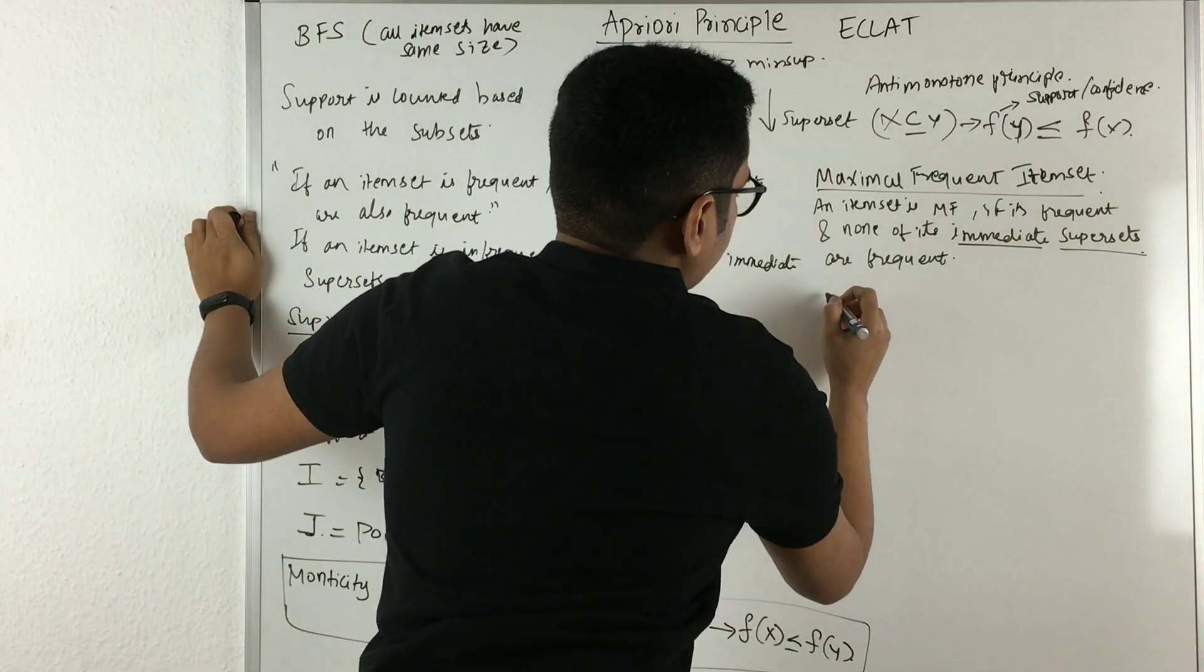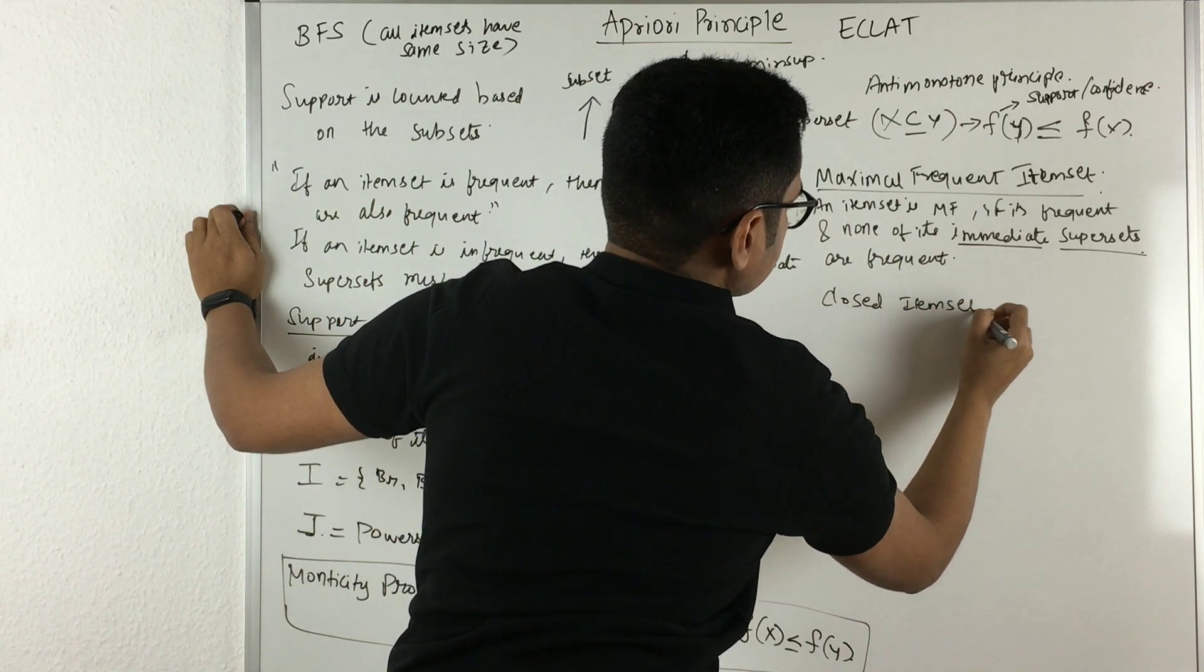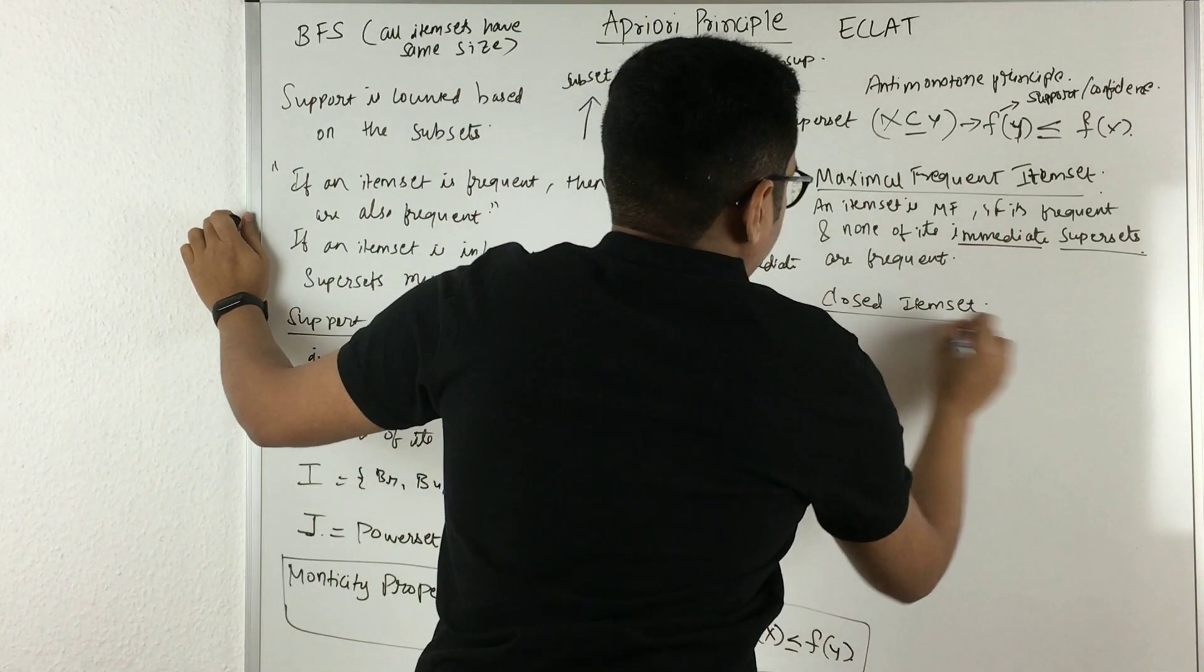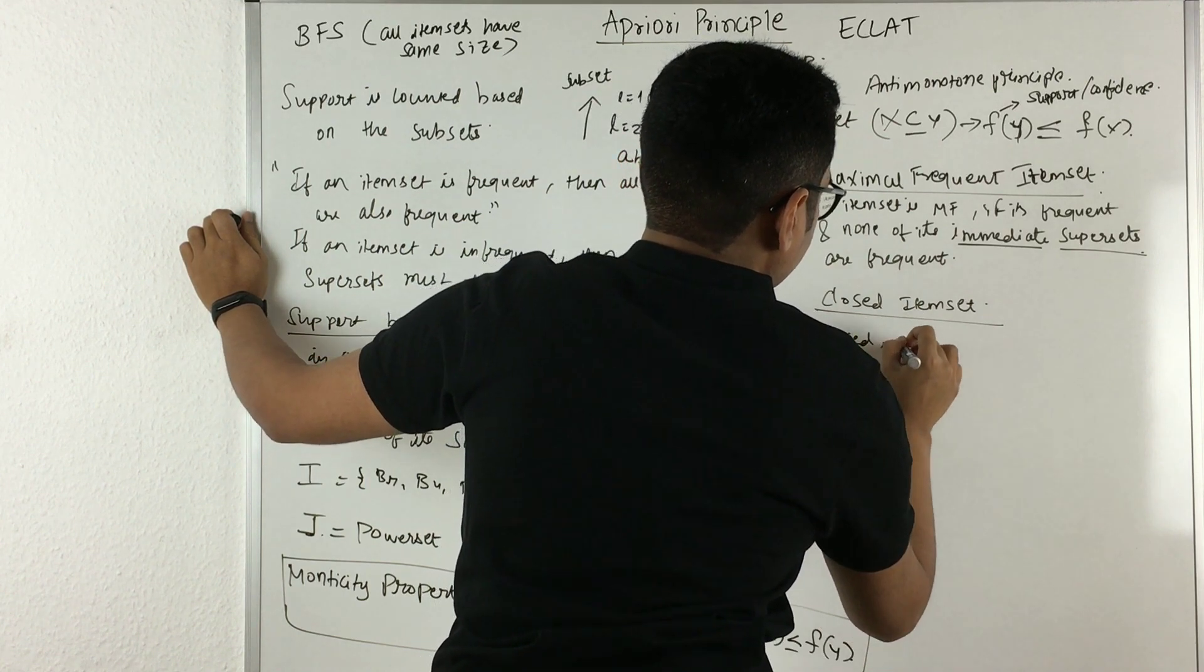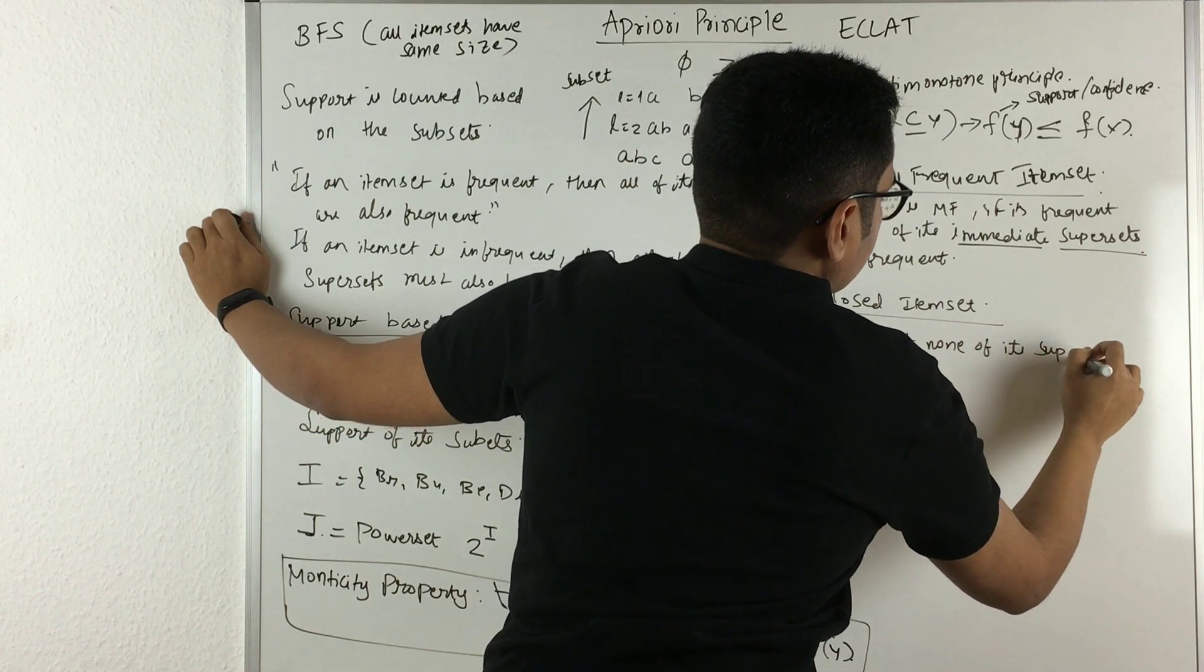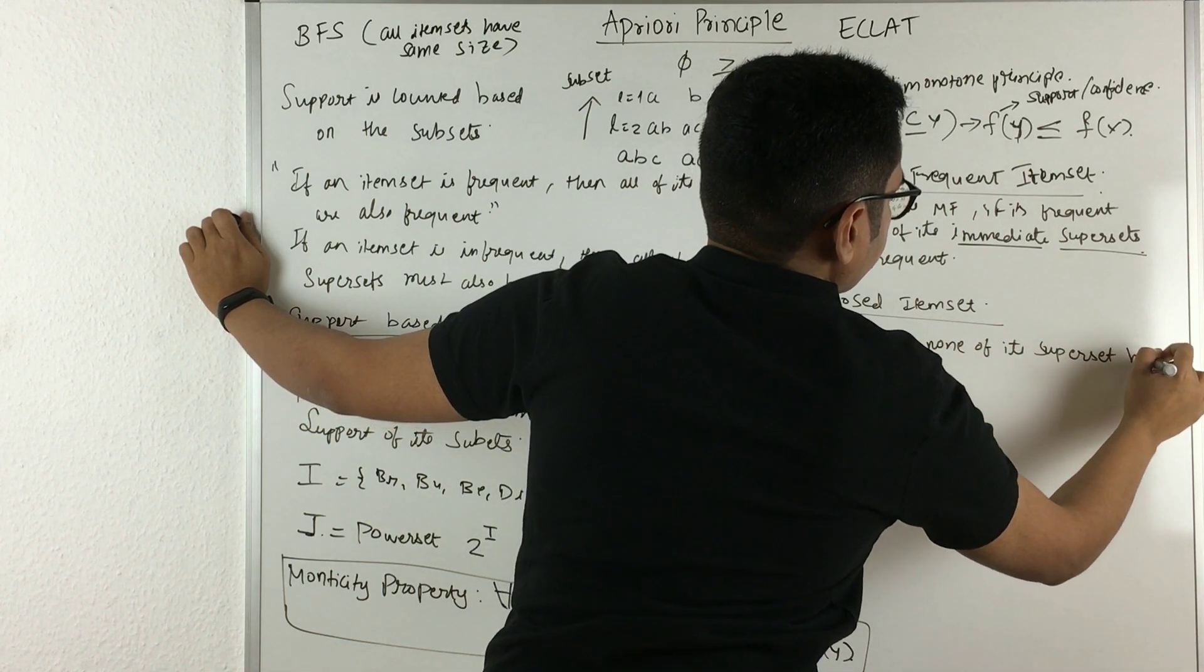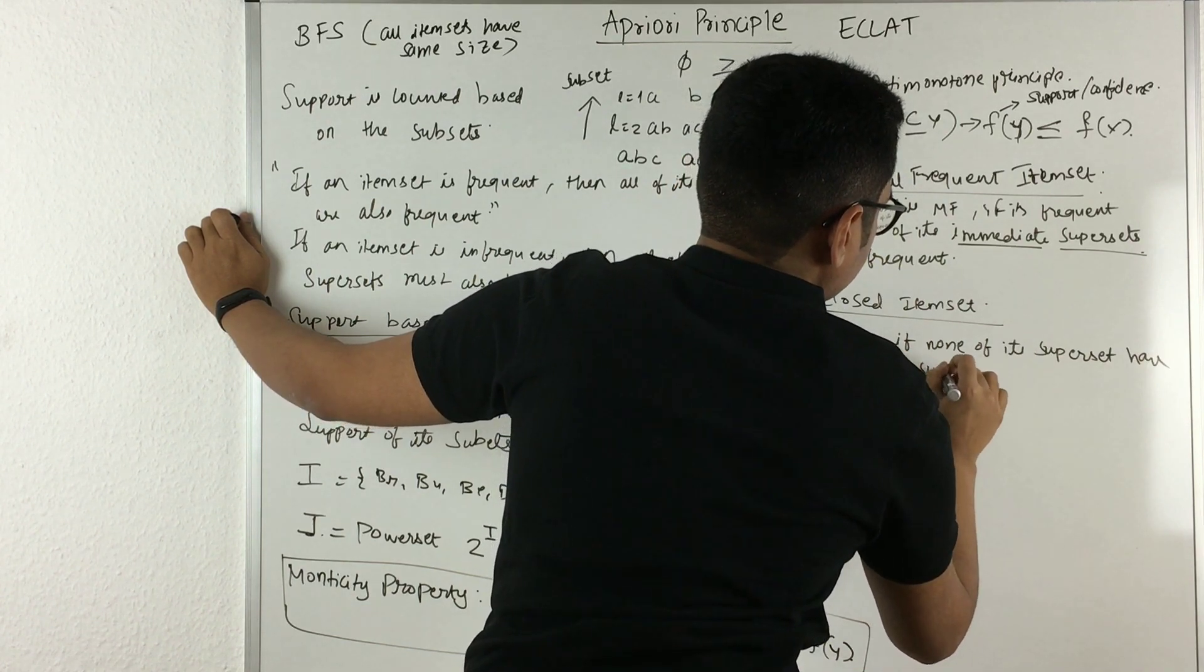Then what we have is called a closed item set. So an item set is closed if none of its supersets have the same support count.